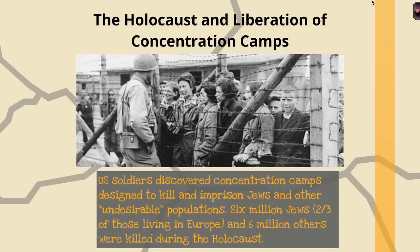Other parts that Americans were involved in during World War II include the Holocaust, which you probably remember from your world history class. This is going to be the systematic imprisonment and killing of primarily Jewish people, as well as other so-called undesirable populations — gypsies, some Soviets, and people who were mentally disabled. Six million Jews, which is two-thirds of those who lived in Europe at this time, and five to six million others were killed during the Holocaust. One of the things Americans came across as they moved through Europe was these concentration camps — we did not know the Holocaust was going on or that these concentration camps existed until soldiers got into Europe, came across these camps, and liberated those who were in them.